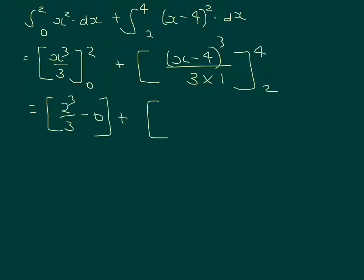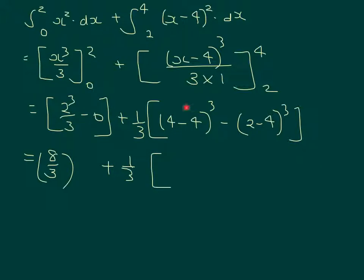Plus, and then I would take the third out, that's down the bottom there, and so we've got 4 minus 4 all cubed minus 2 minus 4 all cubed. Make sure we get our order of operations right. So it's 8 on 3 for the first area, plus a third of 4 minus 4 is 0, so that cancels out. And then we've got minus, second bracket is minus 2 all cubed is minus 8. So it's 8 on 3 plus a third of 8. So it's 8 on 3 plus 8 on 3, which is 16 on 3, or 5 and 1 third units squared.